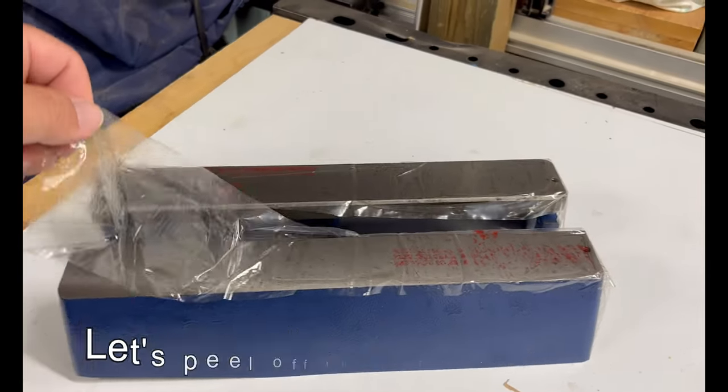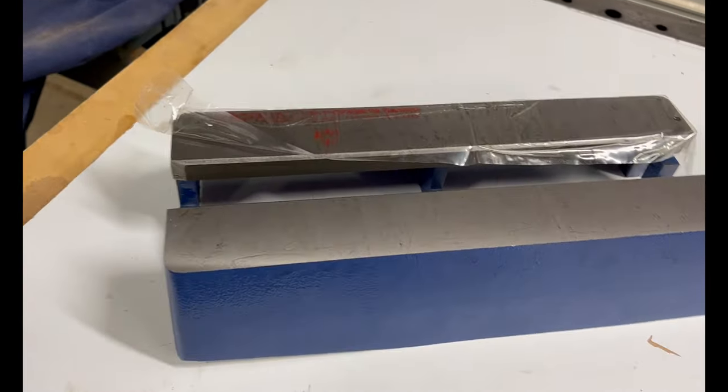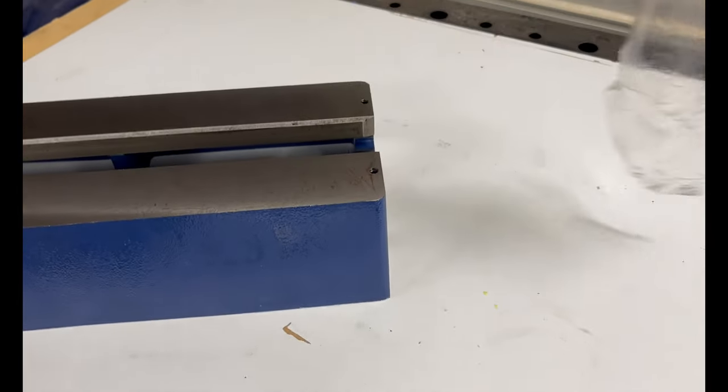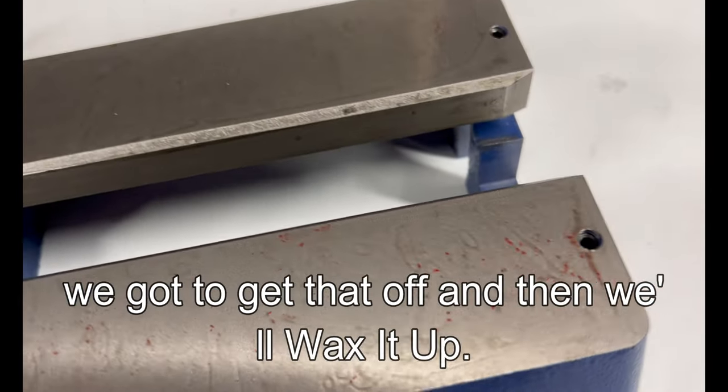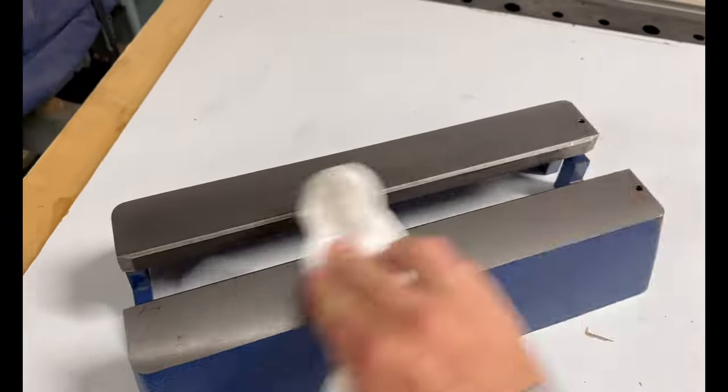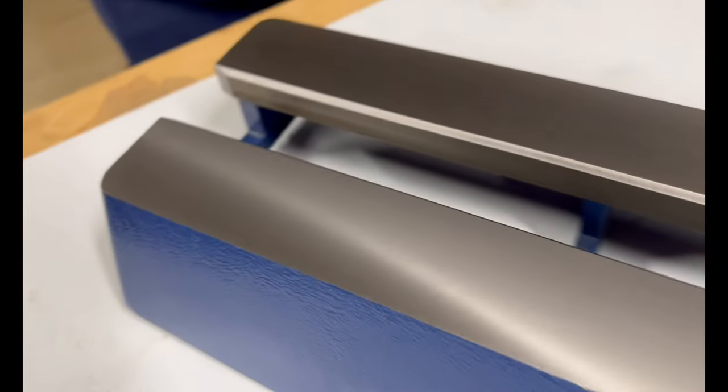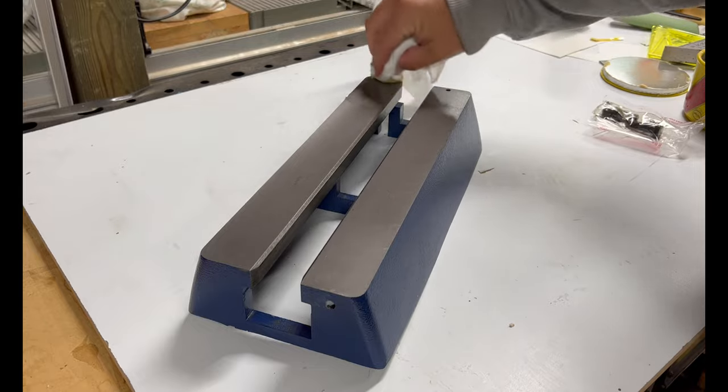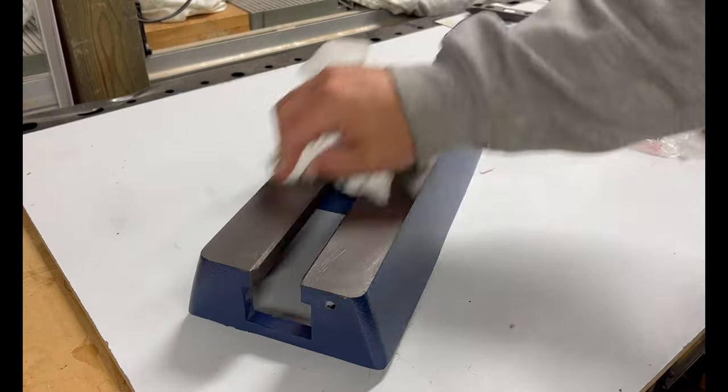Let's peel off this protective film. We got a protective coat of oil on there. We're going to get that off and then we'll wax it up with some paste wax. Nothing like some brand new metal. Let's grab the paste wax real quick.